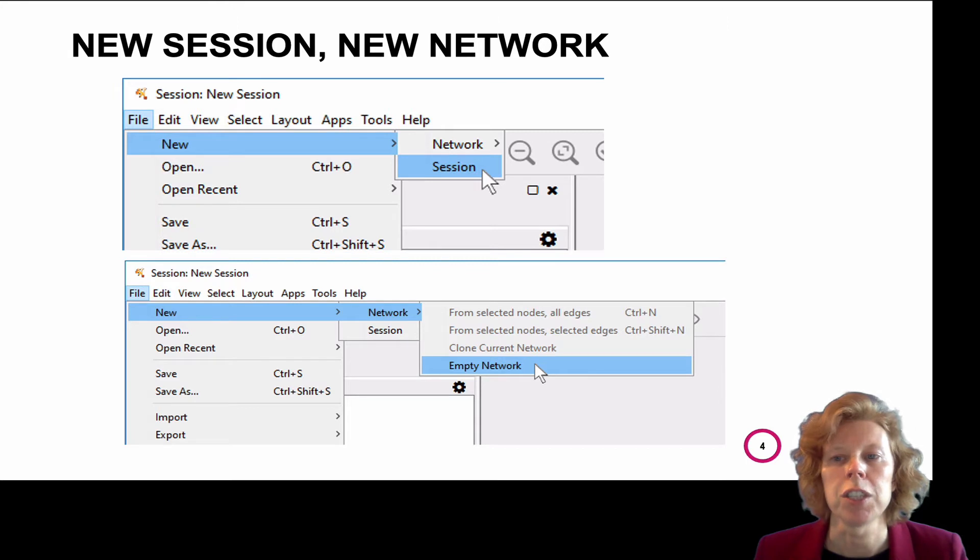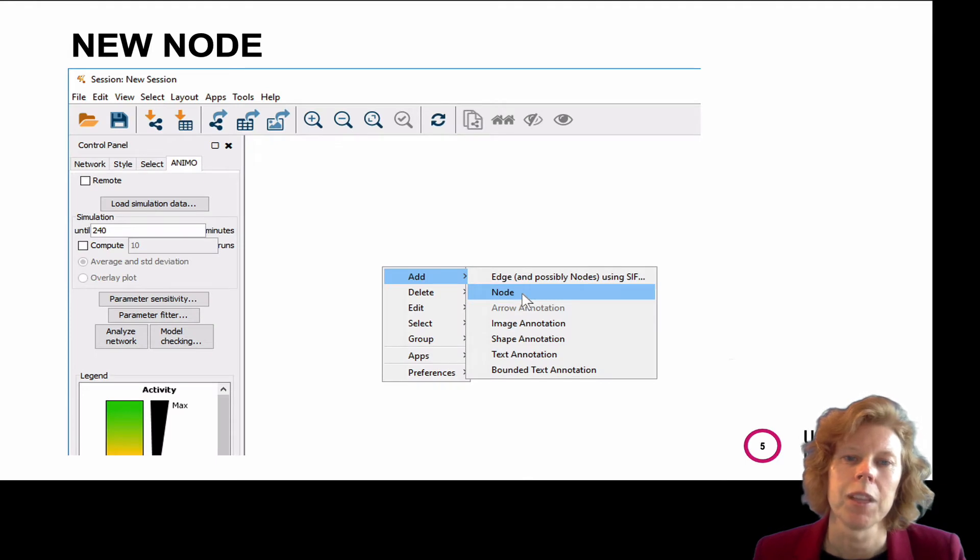We can start by adding a new session or a new network. If you choose network, choose empty network. In the field where you will draw your network diagram, right click, and you will get a pop-up menu.